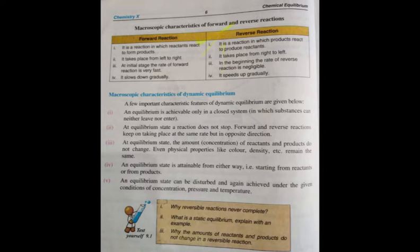For example, when calcium carbonate decomposes, it forms calcium oxide and carbon dioxide. In an open system, the carbon dioxide will escape out rapidly. But in a closed system, the carbon dioxide will again combine with calcium oxide and reform the reactant, calcium carbonate. In this way, dynamic equilibrium can only be established in a closed system, not in an open system.